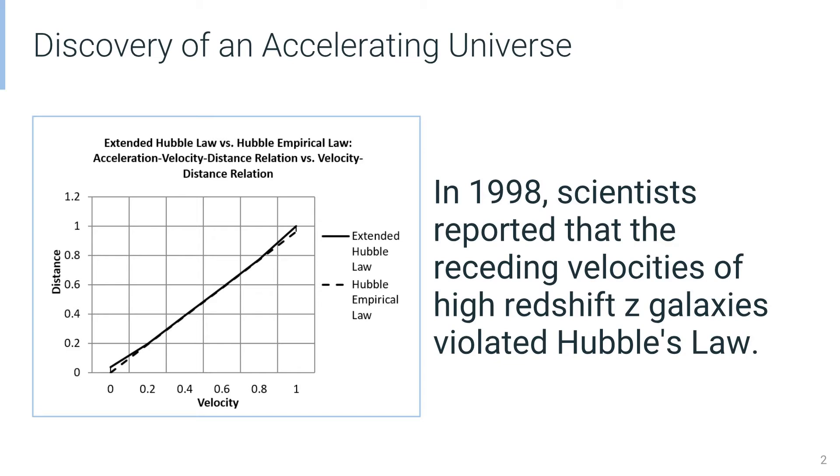In 1998, scientists reported that the receding velocities of high redshift z galaxies violate Hubble's Law. Using our proposed adjustments, we can explain this phenomenon. Please see the graph on the left for a comparison of the original Hubble's Law and our extended Hubble's Law.